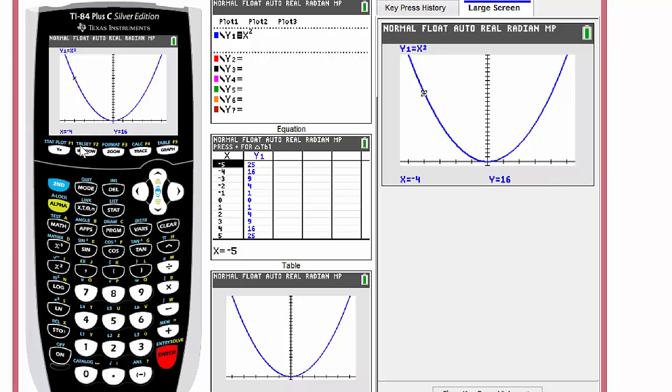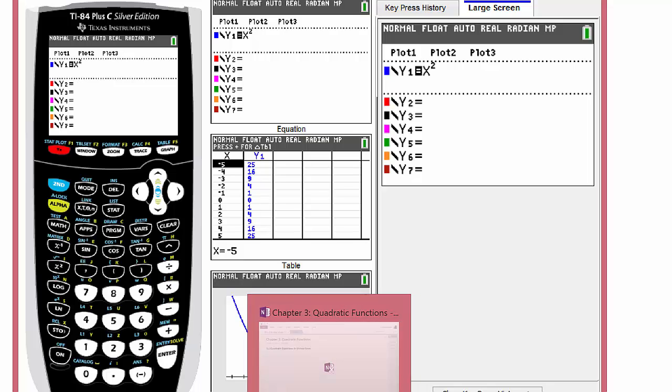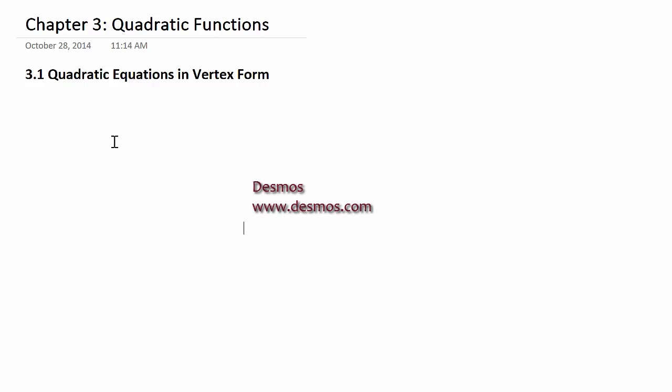But what happens if I change the equation? What if I graph y equals 3x squared or y equals 8x squared? You could graph those on your calculator using the y2 and y3 settings. I'm going to do it on a different application on a website that you're free to use as well. This website is called Desmos, desmos.com. You can set up an account, it ties in with your Google account, and you can do some really cool math things in there.